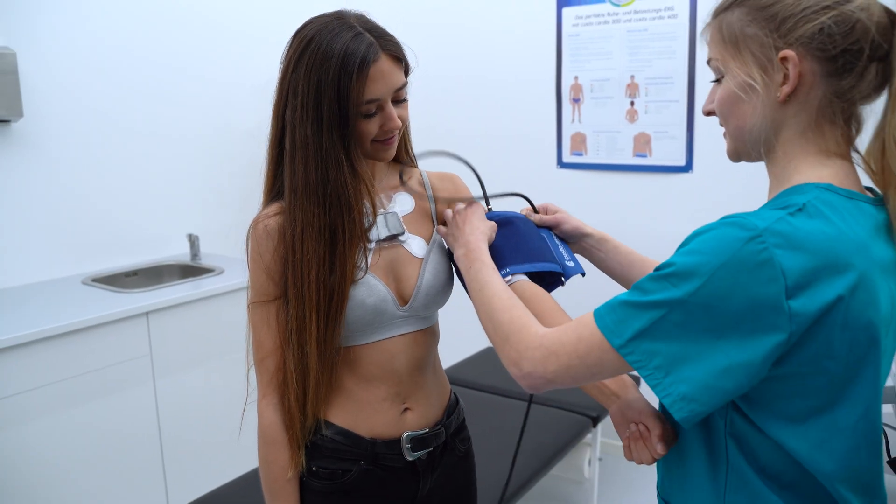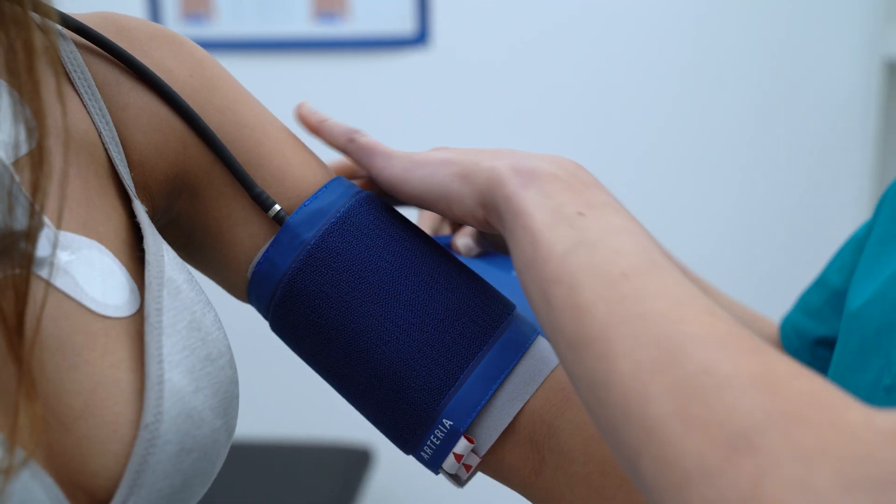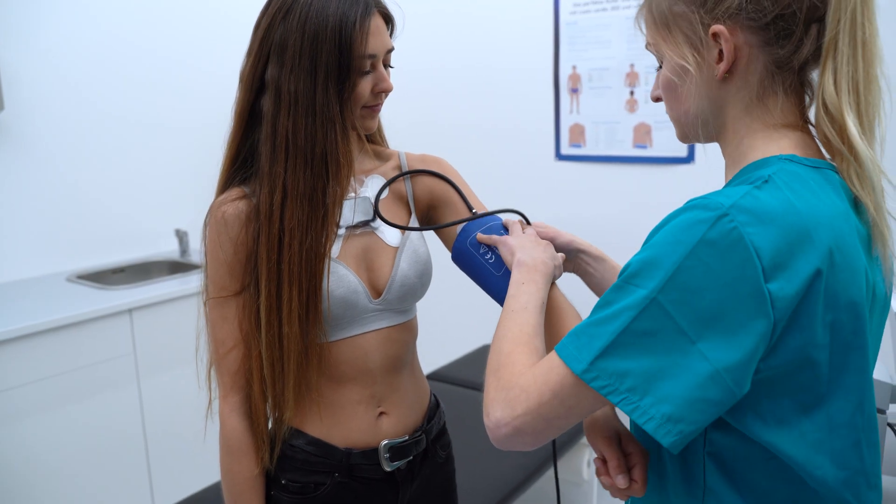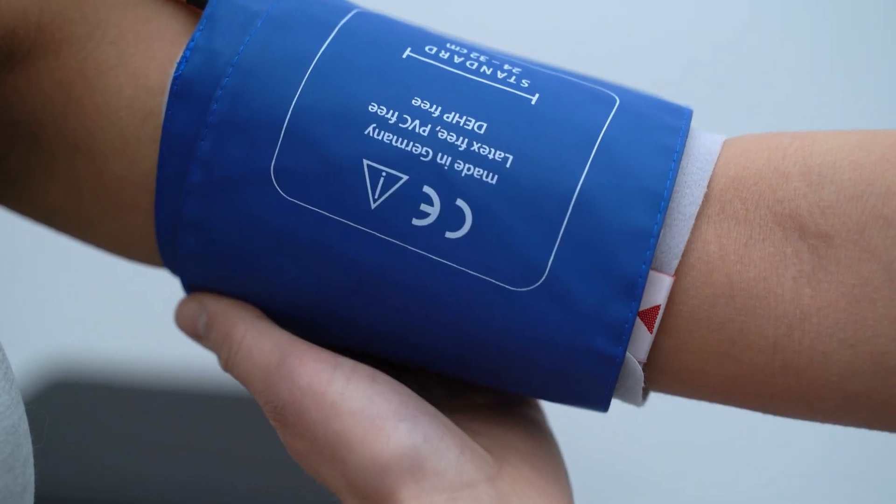Place the blood pressure cuff on the left upper arm, 2-3 cm above the crook of the arm. The marking must be on the brachial artery and the cuff must be neither too tight nor too loose.